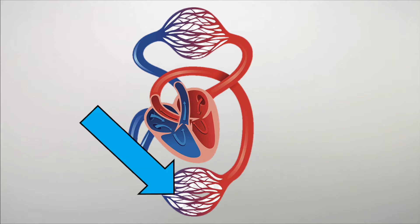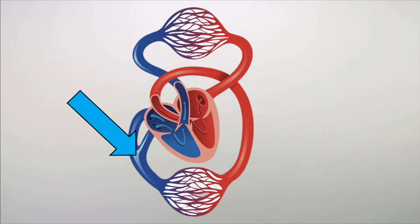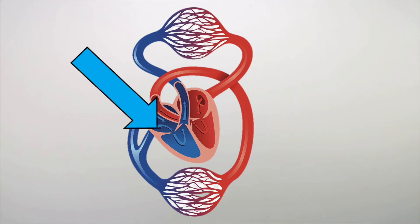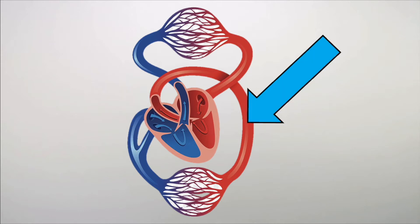The oxygenated blood exits the capillaries into veins. This here is a vein, and veins transport blood back to the heart.